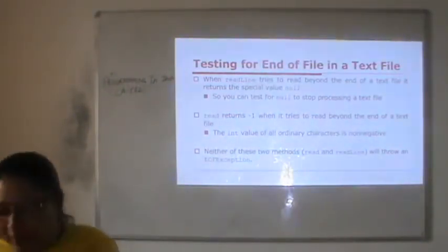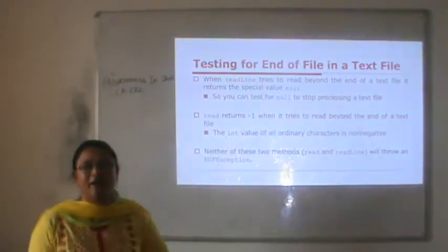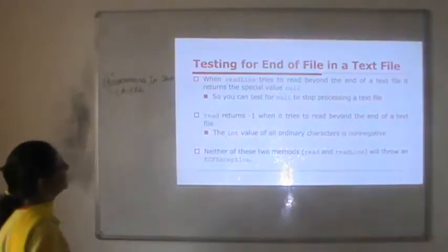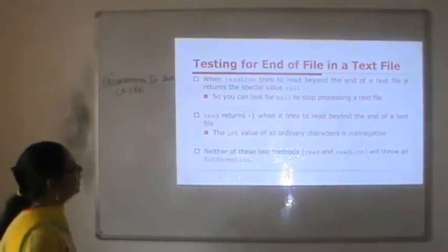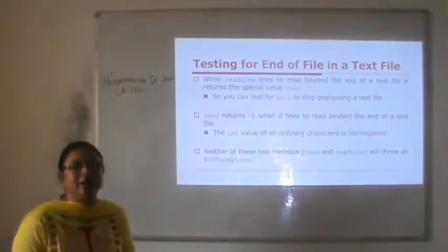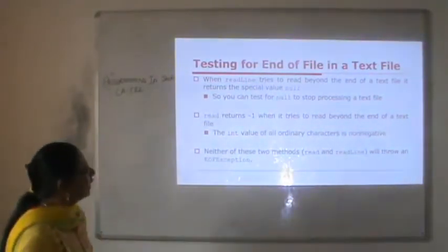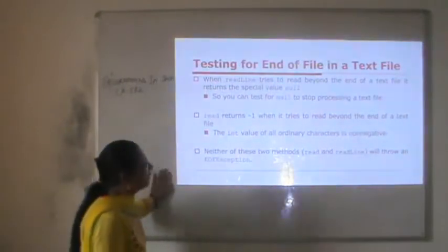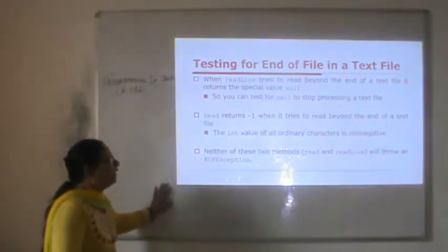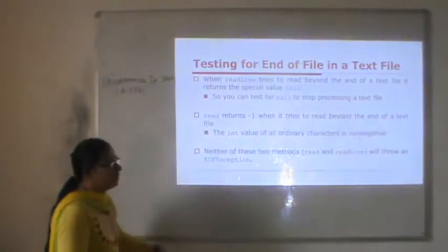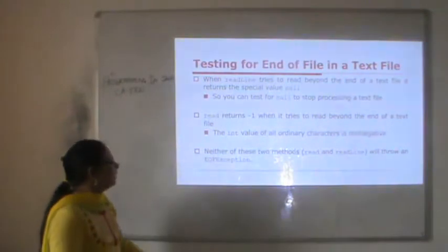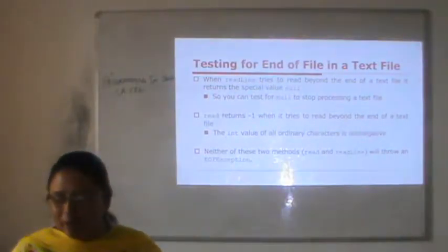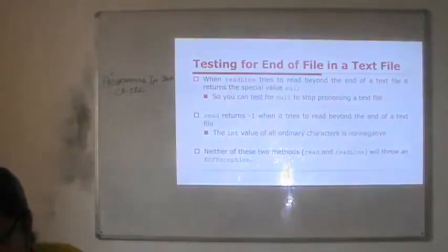Testing for end of file in a text file: if you are reading data from a file and want to find out whether the end of file has been reached, readLine will return the special value null when it tries to read beyond the end of the text file. If readLine returns null, that means end of file and processing stops. The read method returns minus 1 when it tries to read beyond the end of the file — since the int value of all ordinary characters is non-negative, minus 1 indicates end of file. Neither of these methods throws an end-of-file exception.